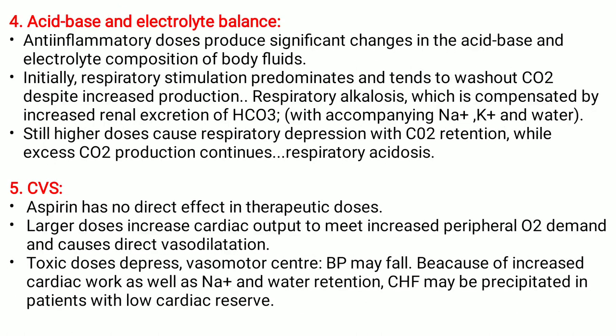Acid-base and electrolyte balance: anti-inflammatory doses produce significant changes in acid-base and electrolyte composition of body fluids. Initially, respiratory stimulation predominates and tends to wash out CO2 despite increased production. Then respiratory alkalosis occurs, which is compensated by increased renal excretion of bicarbonate with accompanying sodium, potassium, and water. Higher doses cause respiratory depression with CO2 retention while excess CO2 production continues — respiratory acidosis. In the CVS, aspirin has no direct effect at therapeutic doses. Larger doses increase cardiac output to meet increased peripheral O2 demand and cause direct vasodilation. Toxic doses depress the vasomotor center; BP may fall. CHF may be precipitated in patients with low cardiac reserve.